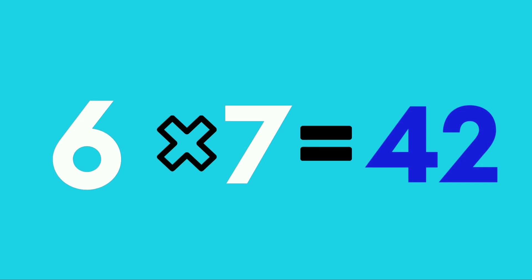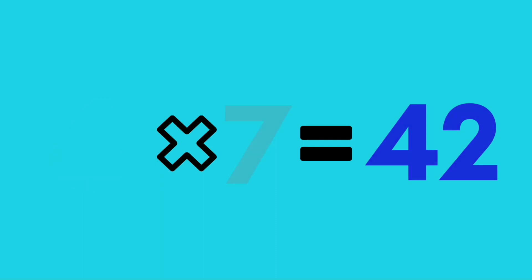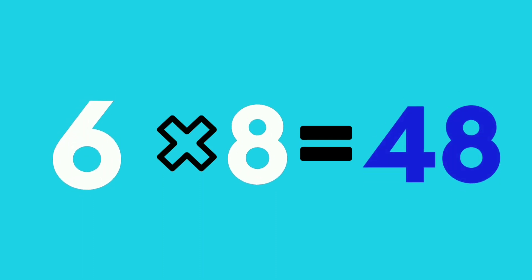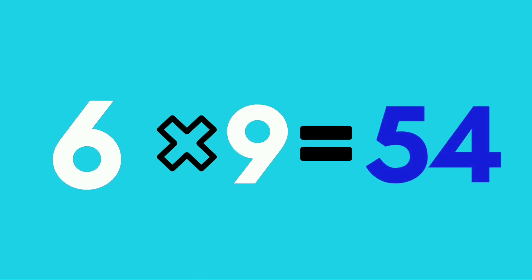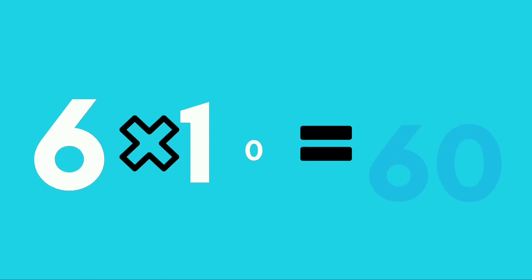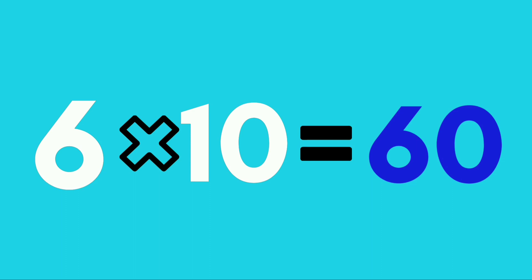Six sevens are forty-two. Six eights are forty-eight. Six nines are fifty-four. Six tens are sixty.